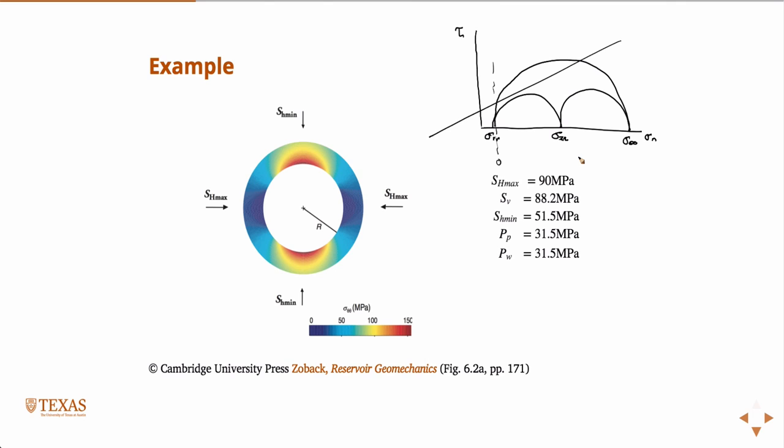Given that blue colors or cold colors are low values and red colors are high values, and looking at that figure, in terms of the relationship to SH min and SH max, if this wellbore were going to fail (and I'm not saying it is because we don't know what kind of rock it is), where would it occur?